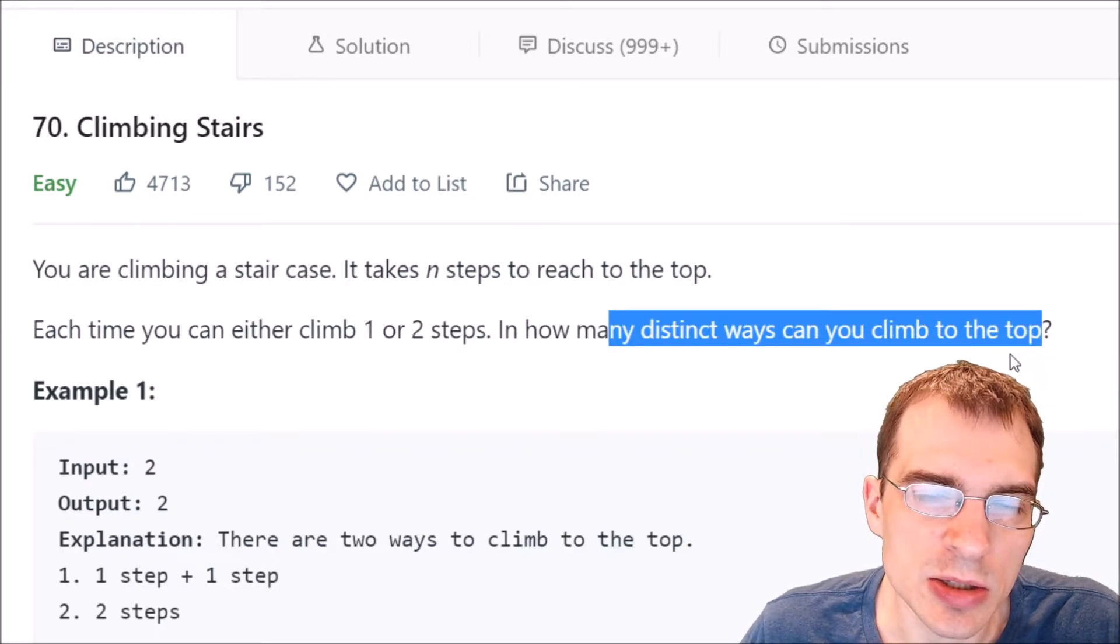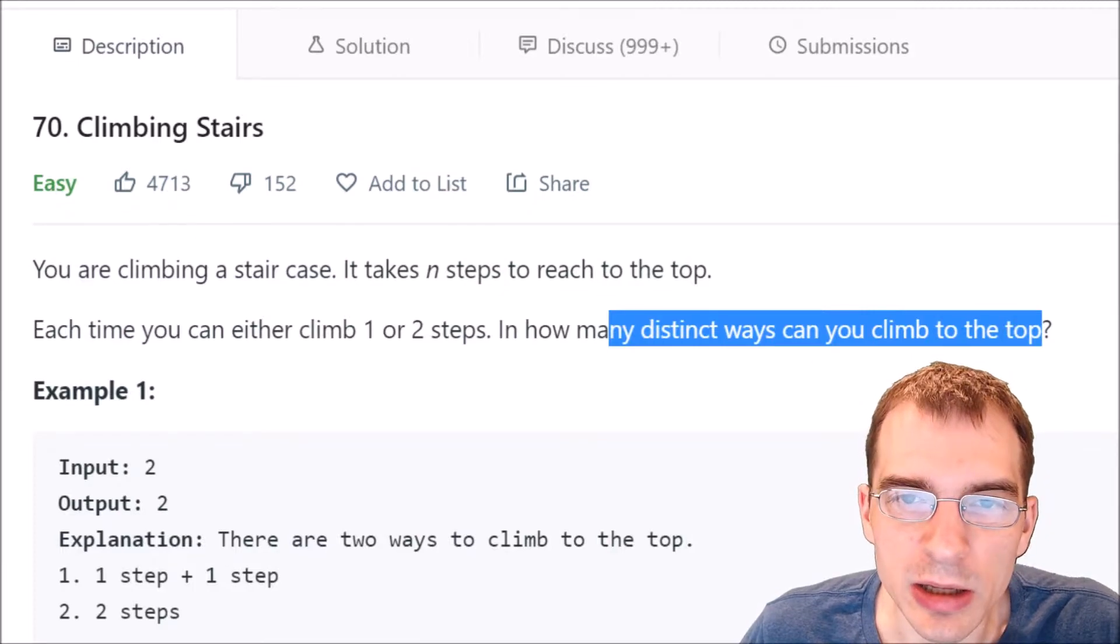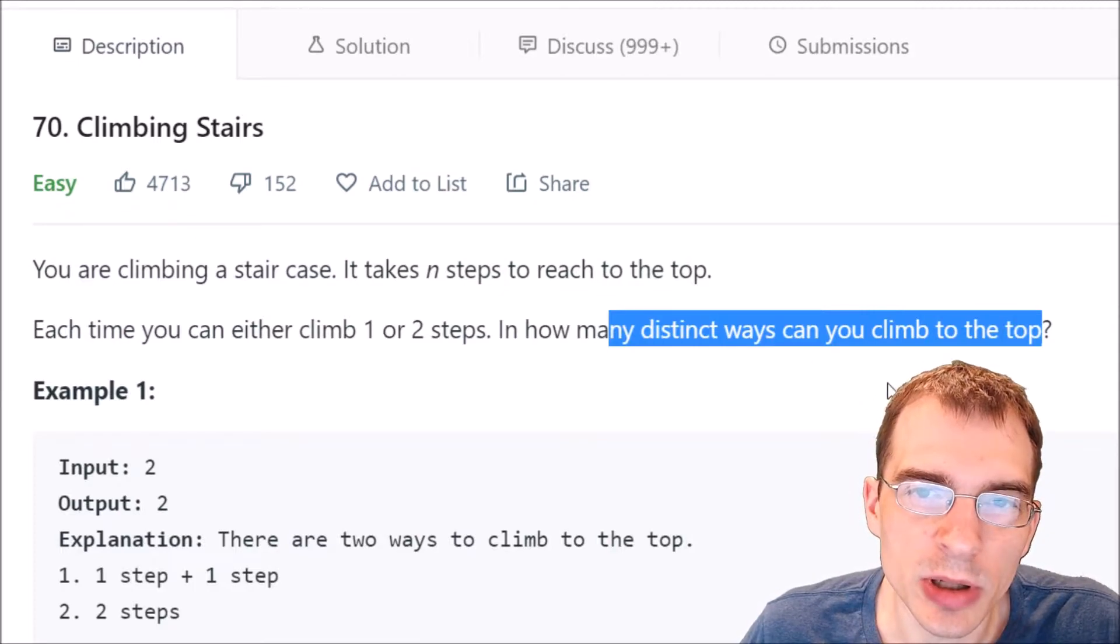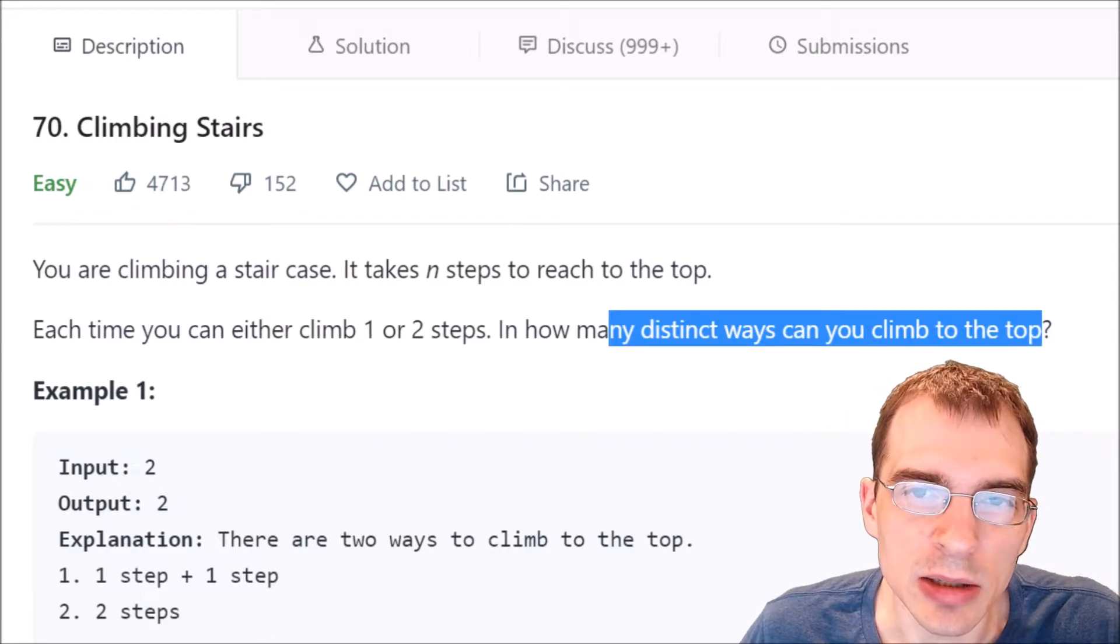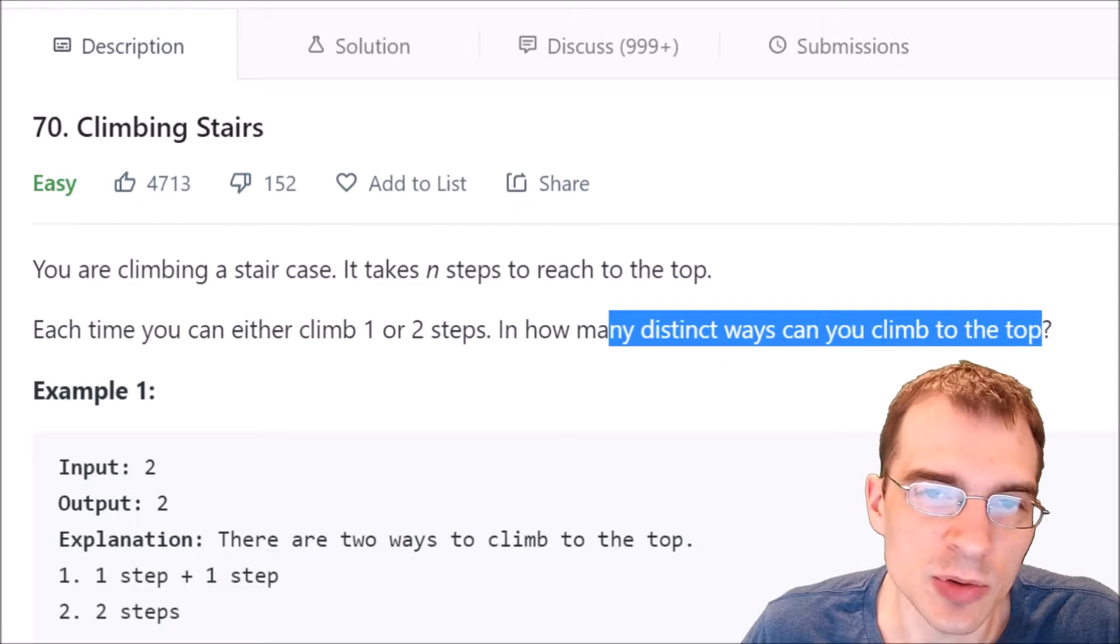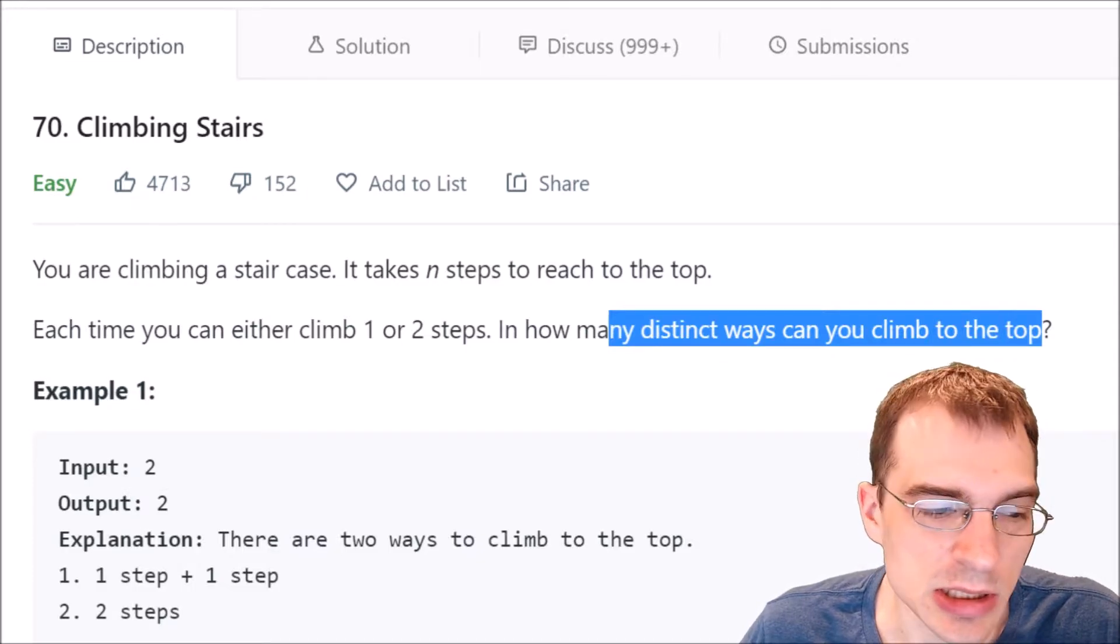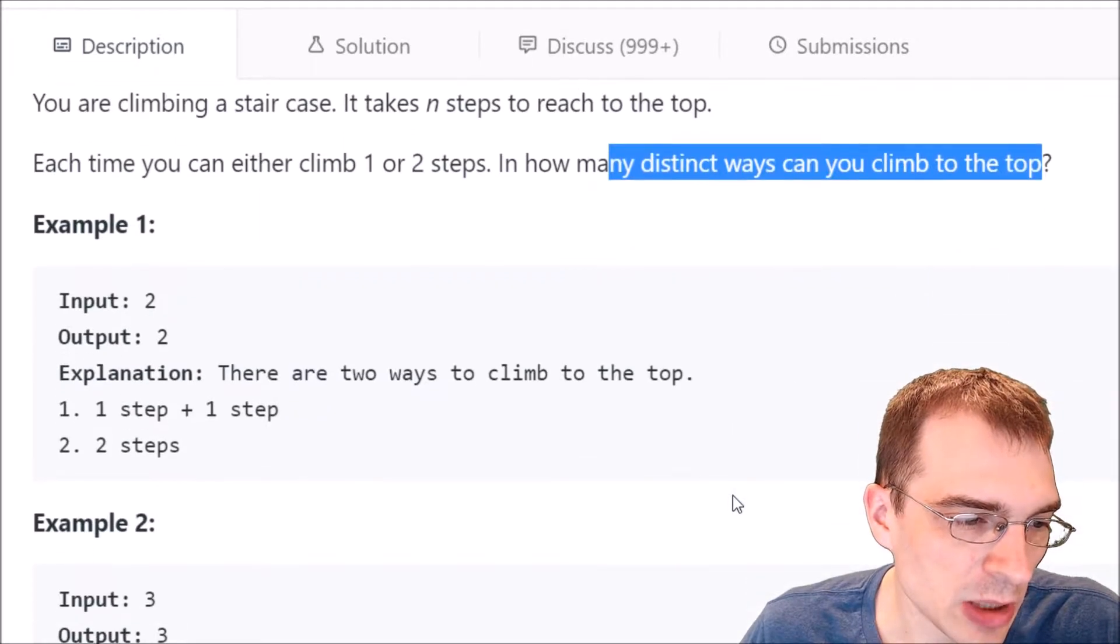So basically we're given a staircase of unknown length and there's two ways we can go about climbing it: by one stair at a time or by two stairs at a time. And how many different ways can we get to the top given that we have those two options for how many steps we take? And they have a couple examples here.